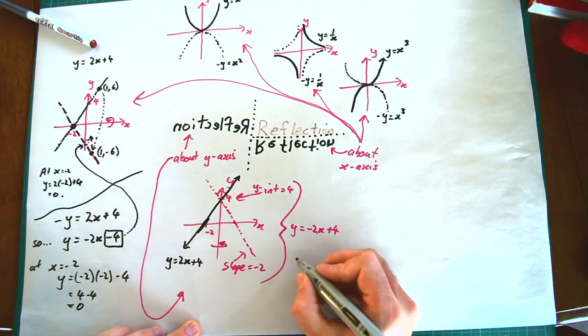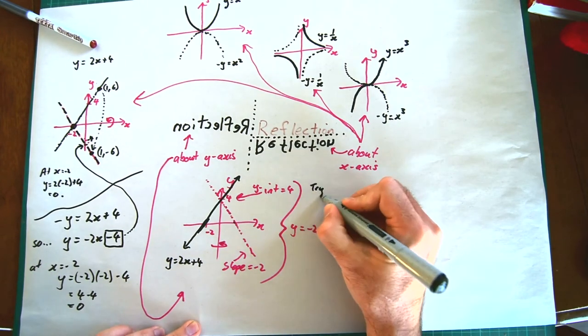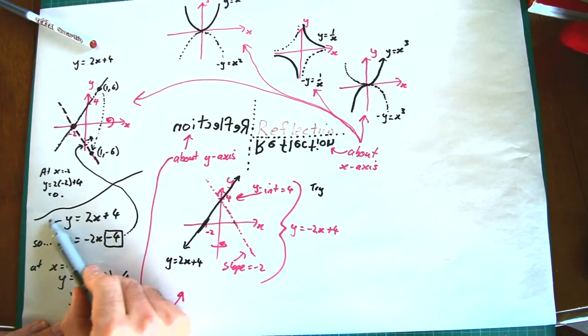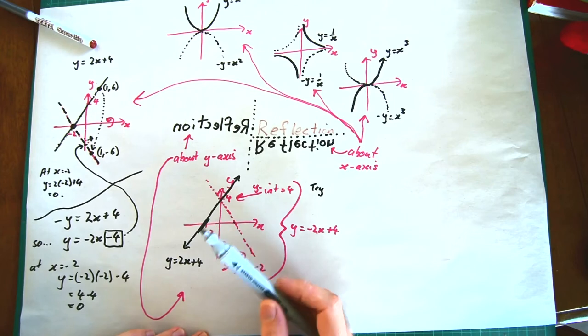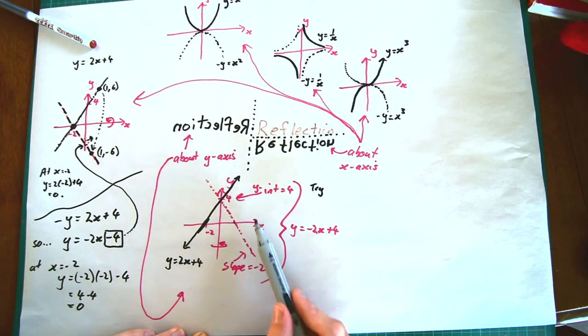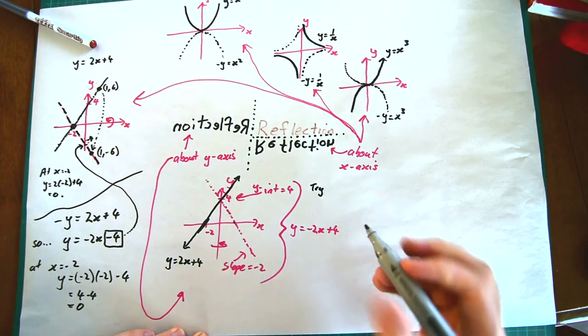Last time, when we wanted to make the positive y values negative and the negative y values positive, we replaced y with a negative y. This time, we don't want to change the y values—it's the x values we want to change. We want the positive x values to become negative, we want the negative x values to become positive, so we replace x with negative x.